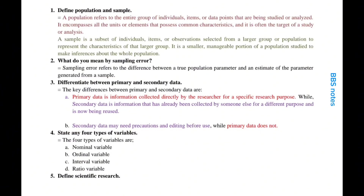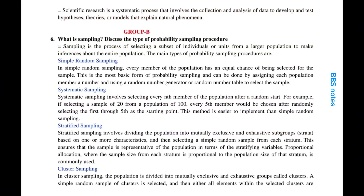Define scientific research. Scientific research is a systematic process that involves the collection and analysis of data to develop and test hypotheses, theories or models that explain natural phenomena.